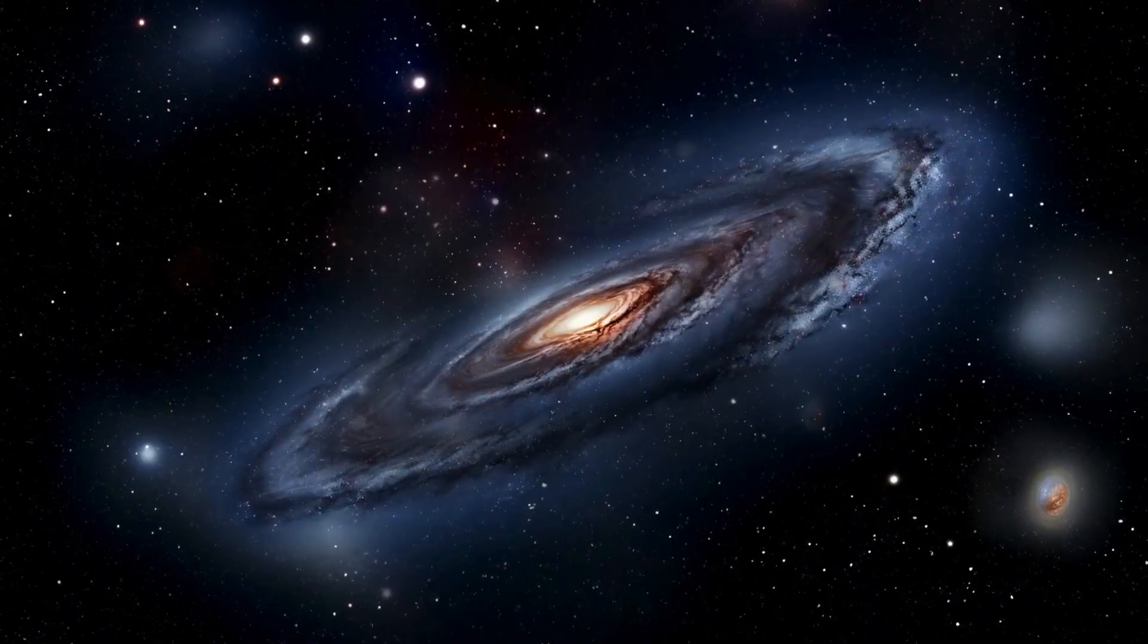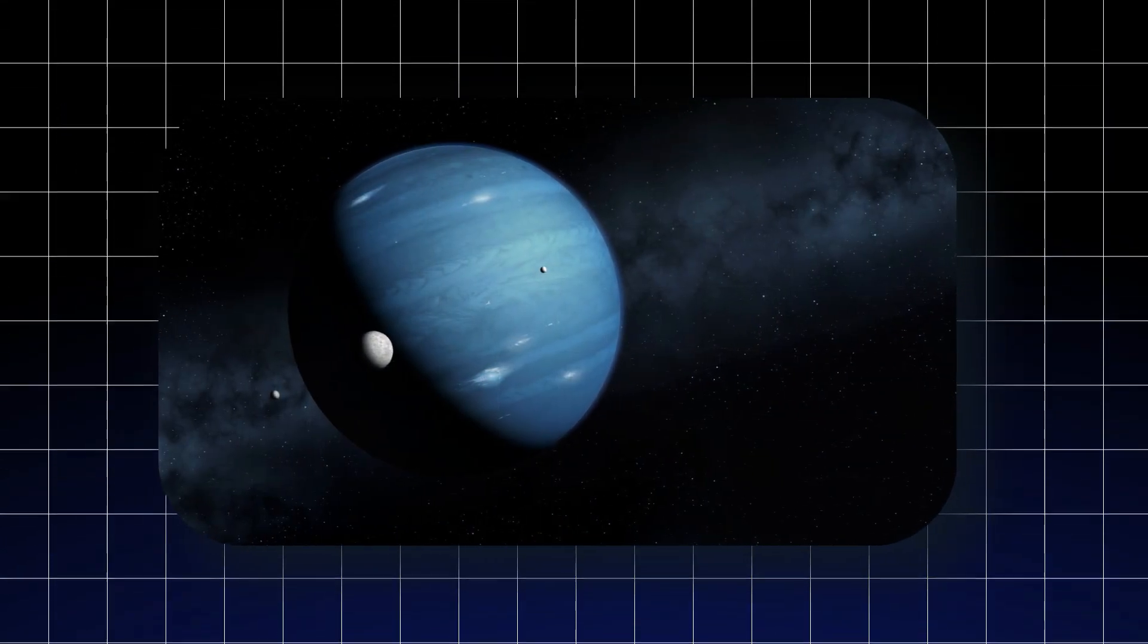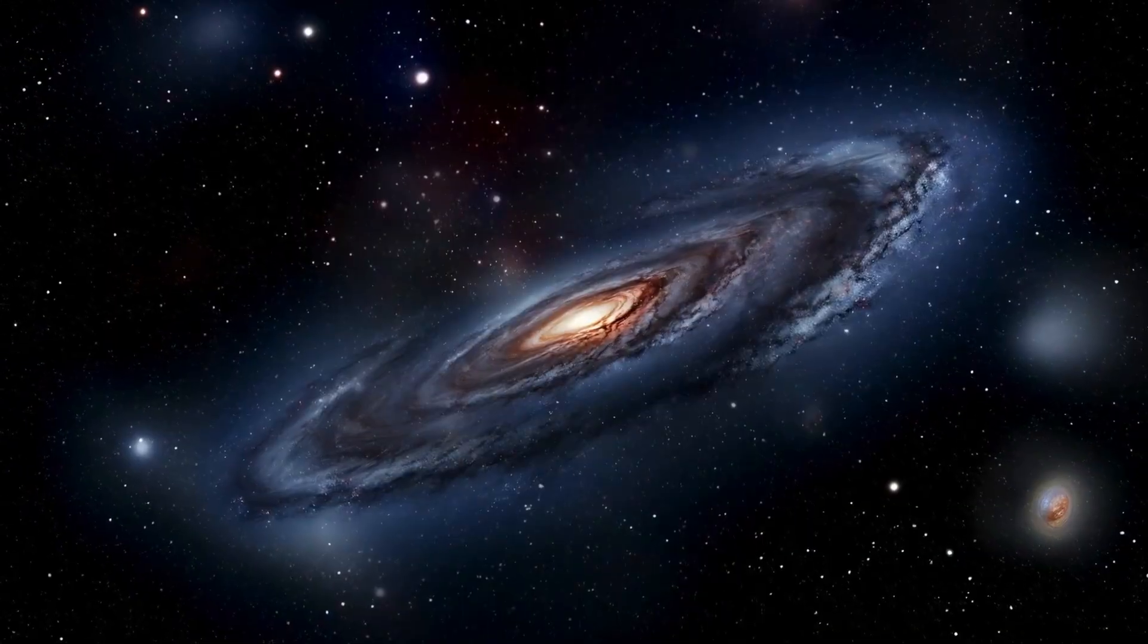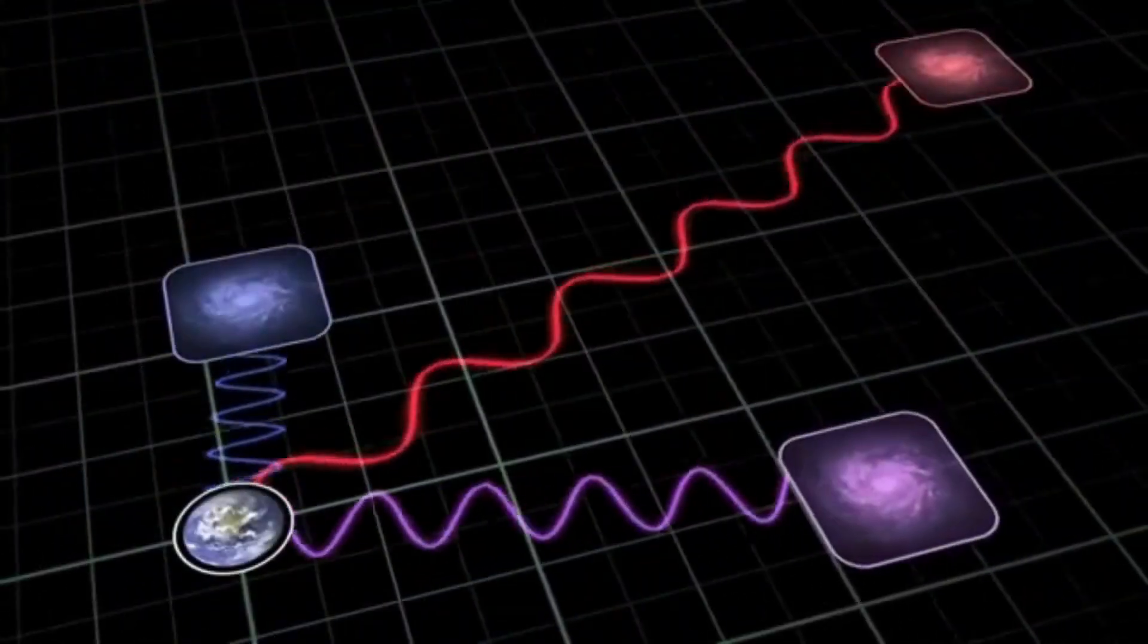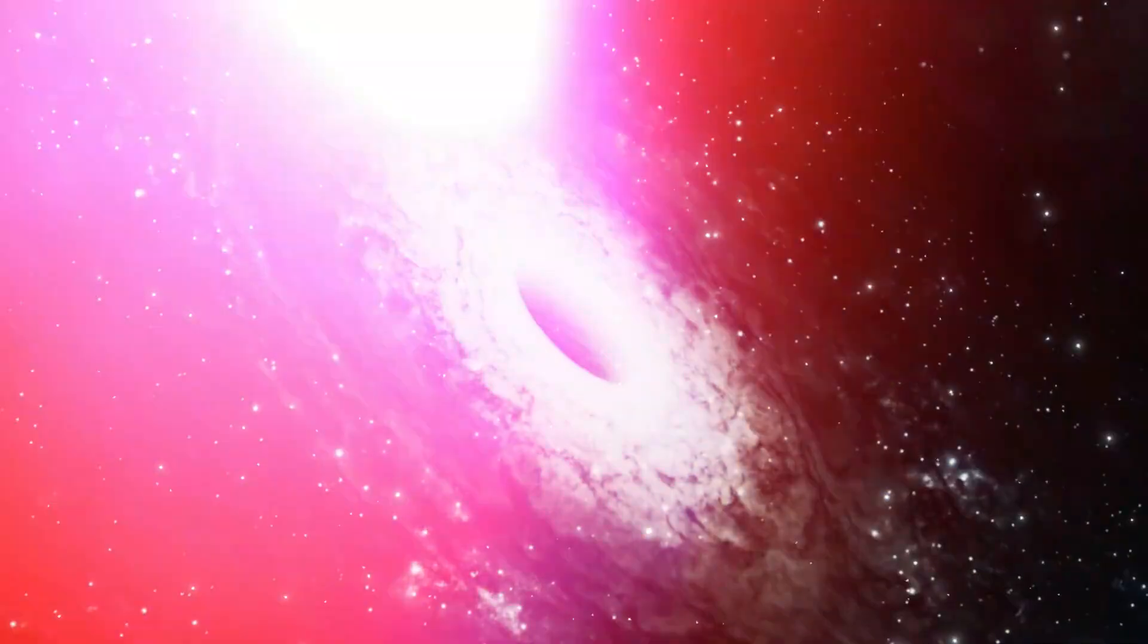No known object accounted for this. It was Planet 9 hiding in plain sight, its feeble light signature masked by its immense distance and the frigid darkness of the outer solar system.